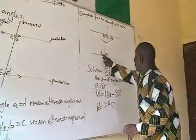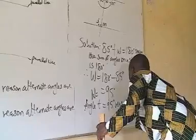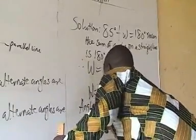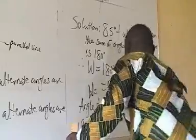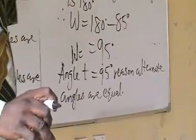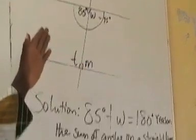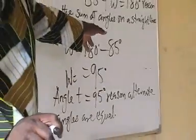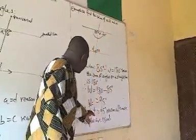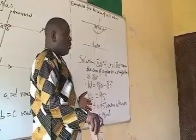Angle T — reason: alternate angles are equal. We have gotten W to be 95. And we say anything you have here must reflect here. So our T is also 95. Reason: alternate angles are equal.